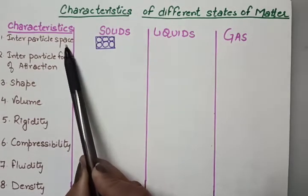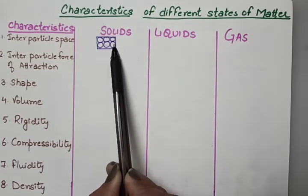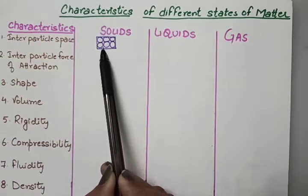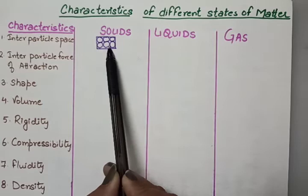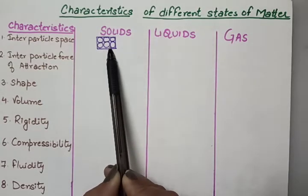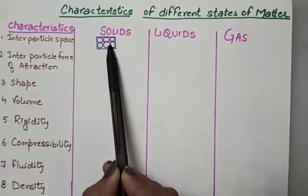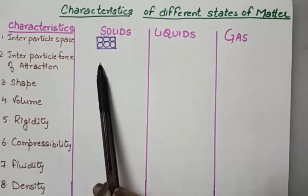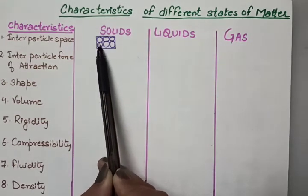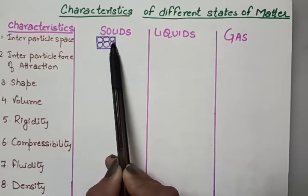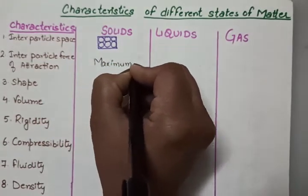As you all know, in solids the particles are tightly packed — that means the space between the particles is very less. So in solids, the inter-particle space is very less. Due to this closeness and less inter-particle space, their forces of attraction are maximum. The particles of solids are tightly packed and have strong forces of attraction between them — maximum forces of attraction.